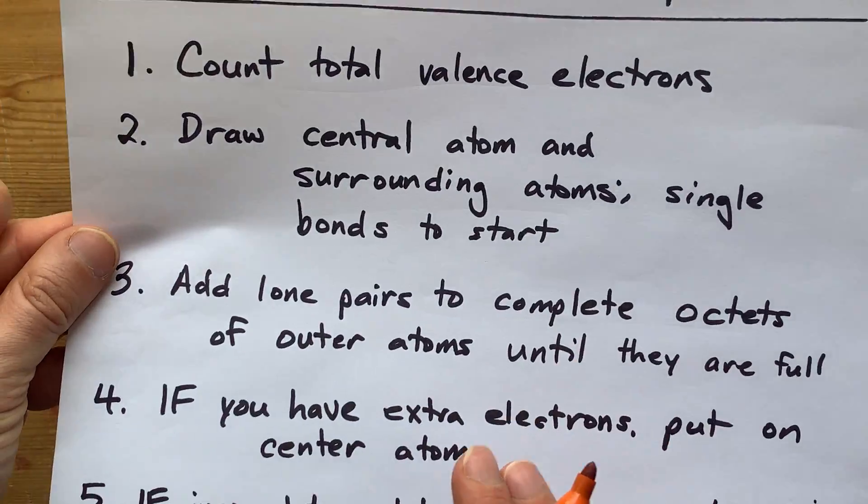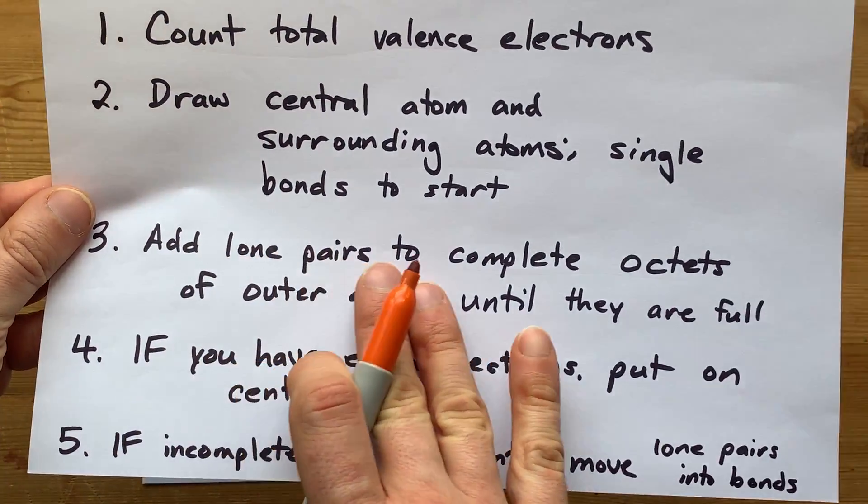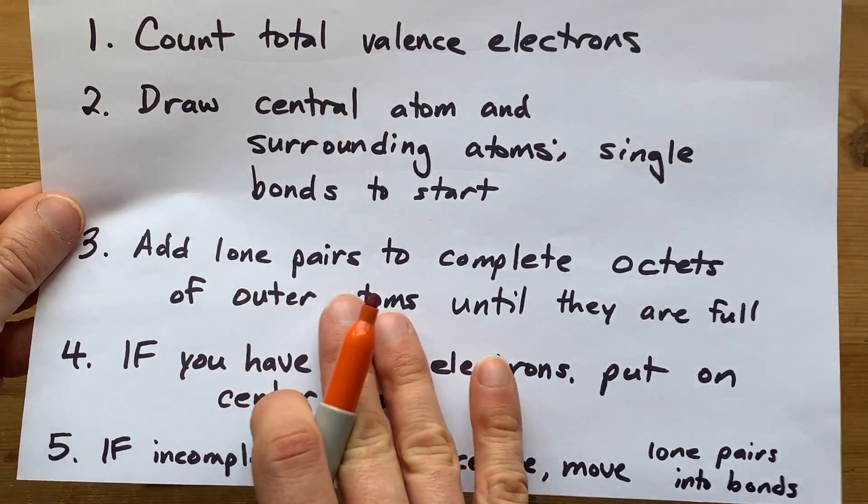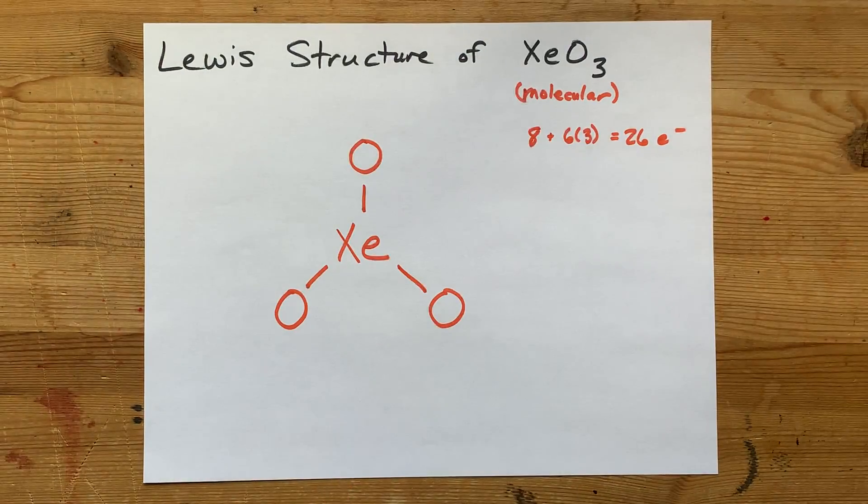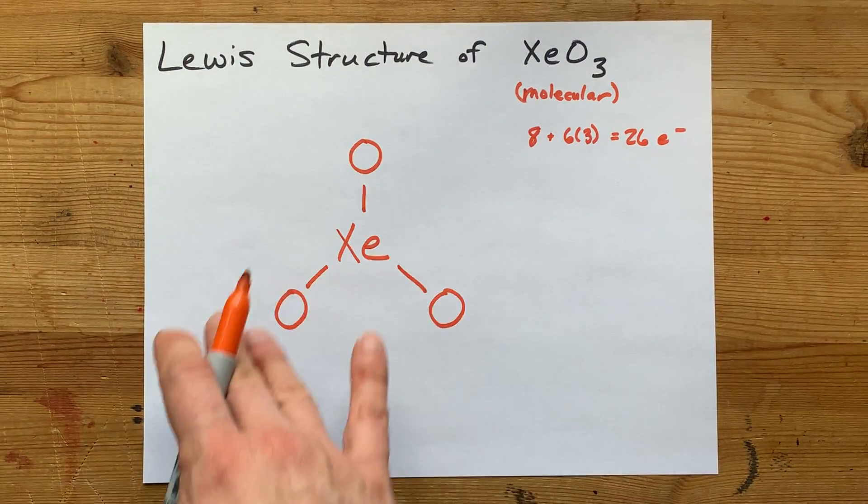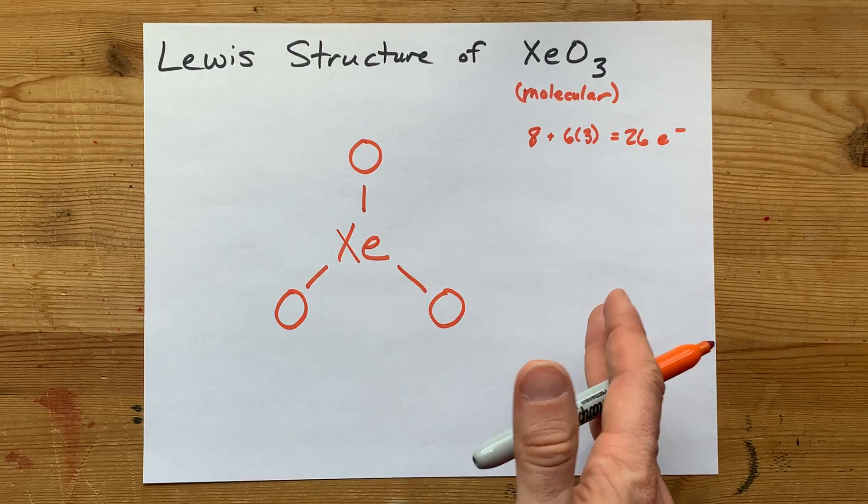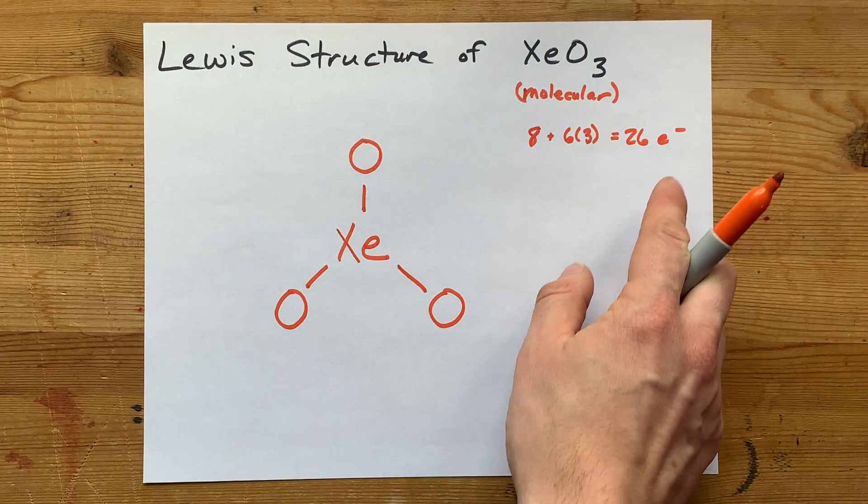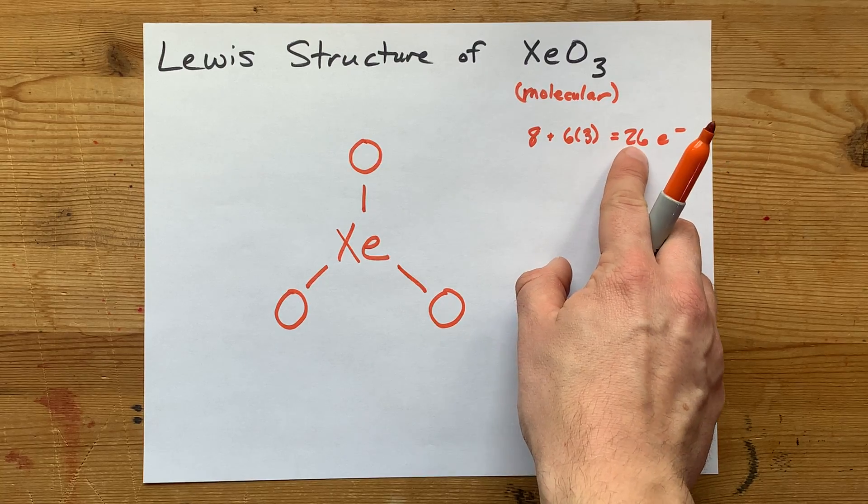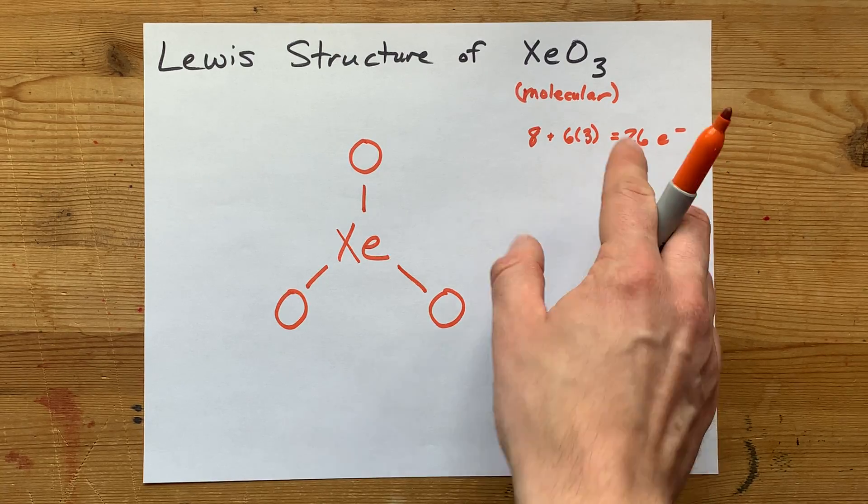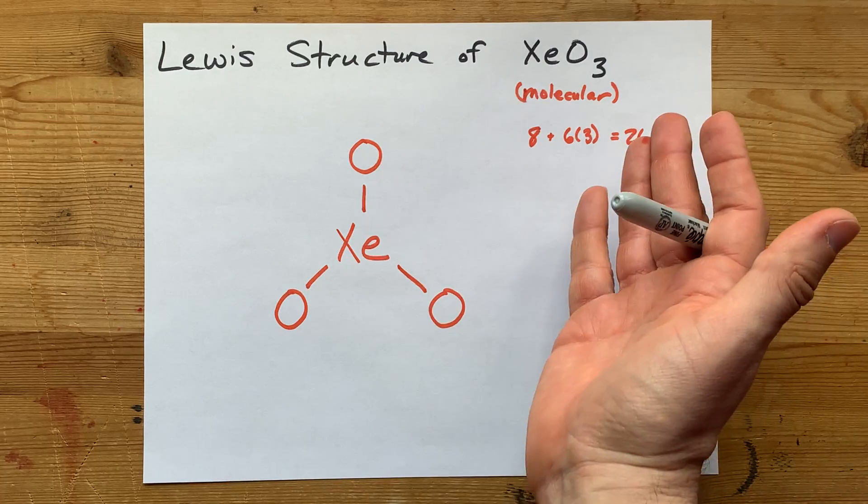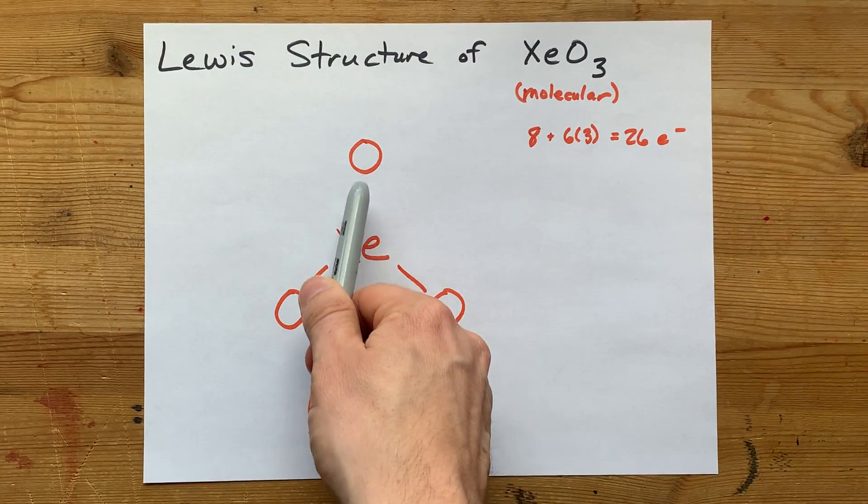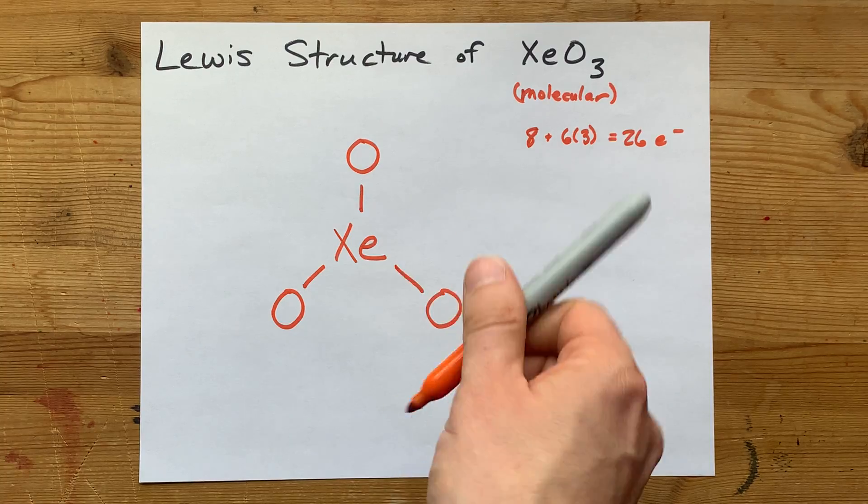Still going well. Add lone pairs to complete the octets of the outer atoms until they are full. Each oxygen is going to need 8 electrons around it. Oxygen does follow the octet rule all the time. And I'm going to be careful not to put more than 26 electrons total, because that's all that I'm going to be allowed to deal with.